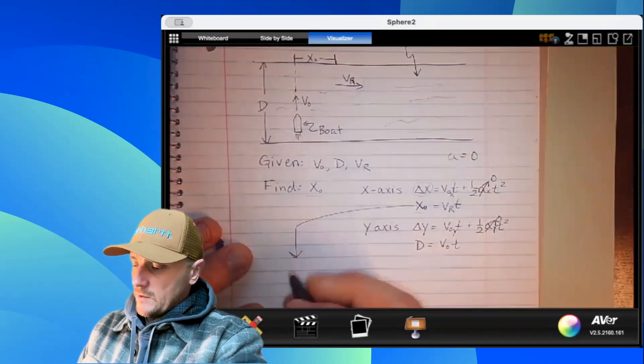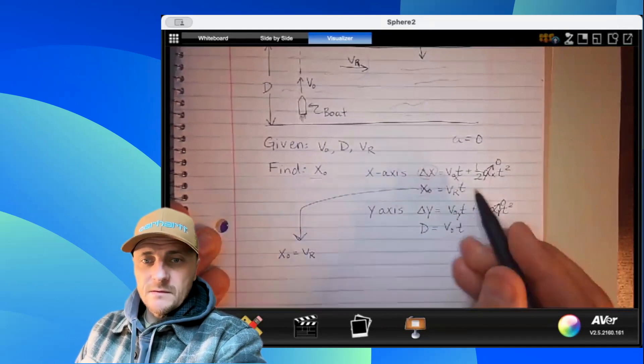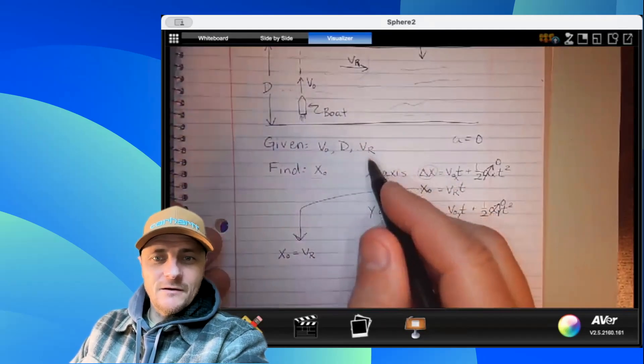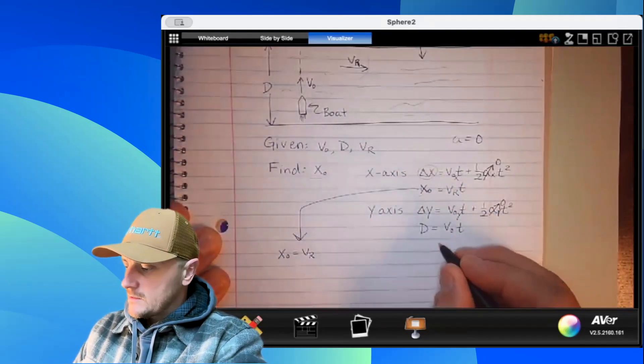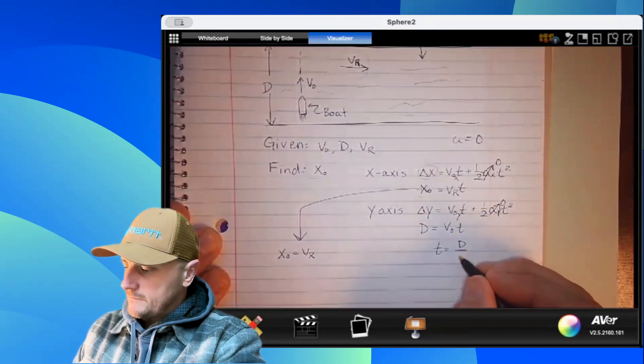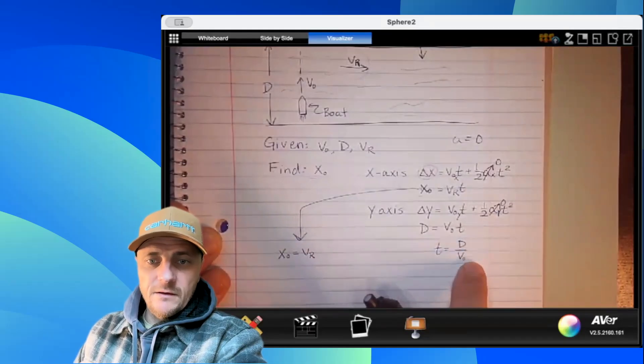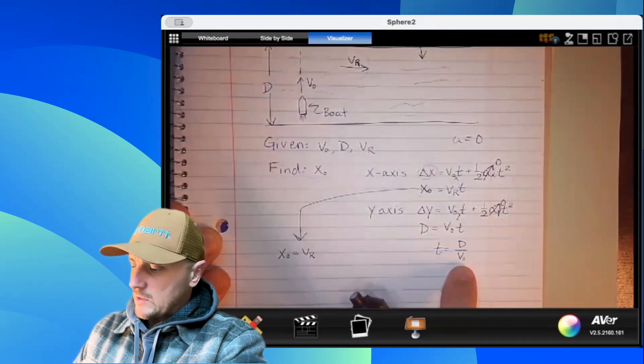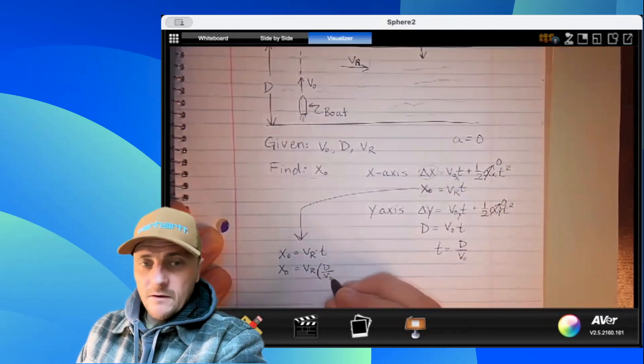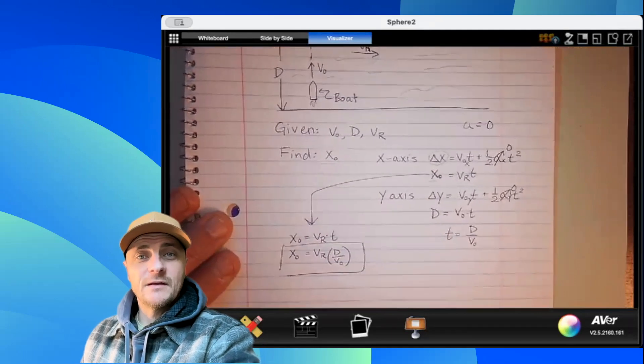Let's rearrange our equations. I'd say x-naught is equal to v-r times t. But what is t in terms of the things that I know? Turn your attention to your y-equation. Solve this for t. Divide both sides by v-naught. And I flipped it around. So t is d over v-naught. And let's plug that in for the t that we see right here. d over v-naught. And that's your final answer because it has all the things they asked for.